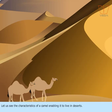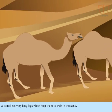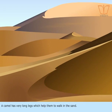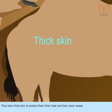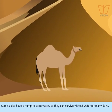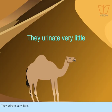Let us see the characteristics of a camel enabling it to live in deserts. A camel has very long legs which help them to walk in the sand. They have thick skin to protect them from heat and they never sweat. Camels also have a hump to store water so they can survive without water for many days. They urinate very little.